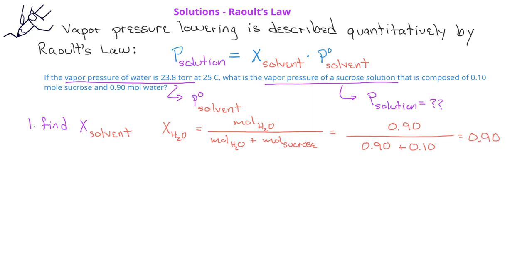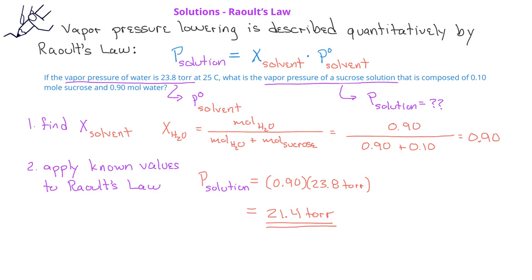We now multiply the mole fraction of the solvent, 0.90, times the vapor pressure of the pure solvent, 23.8 torr. And that will give us the vapor pressure of the solution, which would have a value of 21.4 torr.